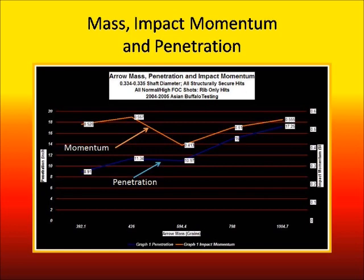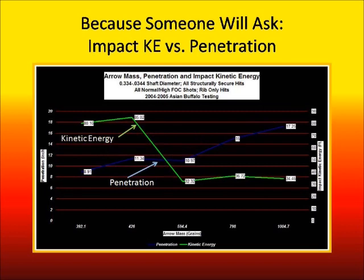Now, just because someone always has to ask, here's the graph for kinetic energy — same set of arrows along with the penetration. Again you can't see the blue line but you can see the numbers. You can see we have very high kinetic energy but the lowest penetration over here with these light arrows — going all the way up to 86 foot-pounds with around 11 inches of penetration. And over here we have our big heavy arrows with very low kinetic energy but penetration up here — not quite double, but this is down at 34 foot-pounds, way less than half the kinetic energy.